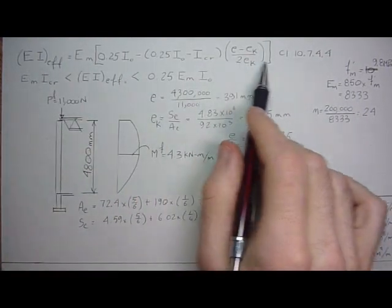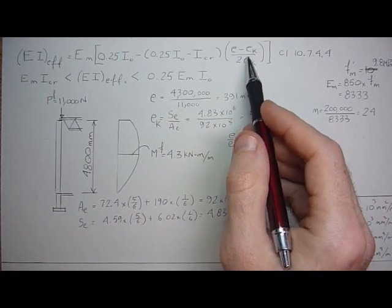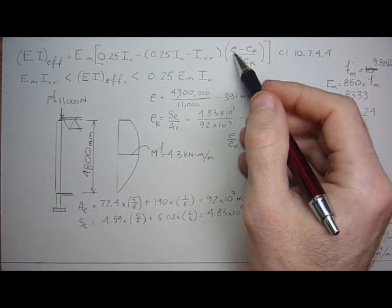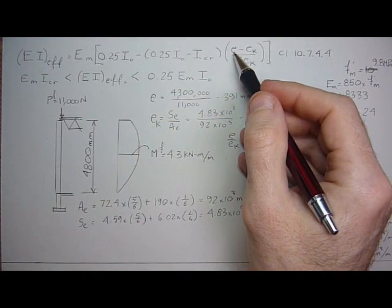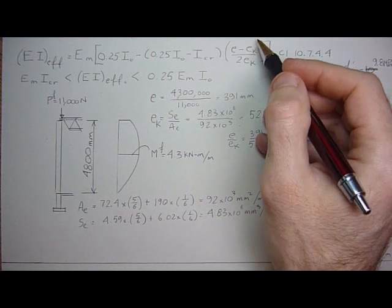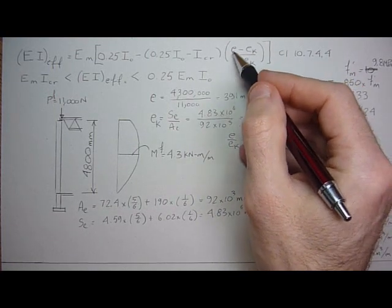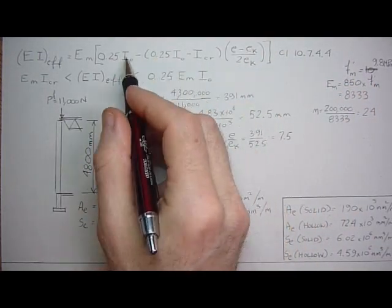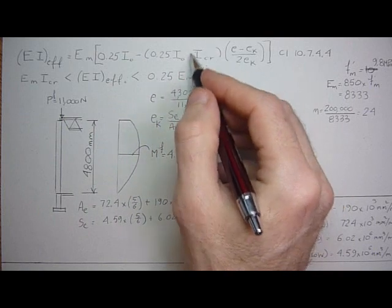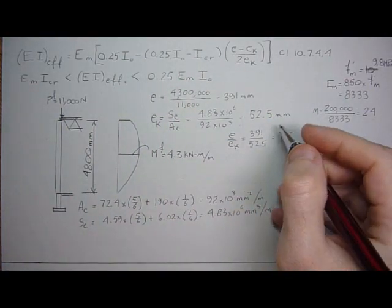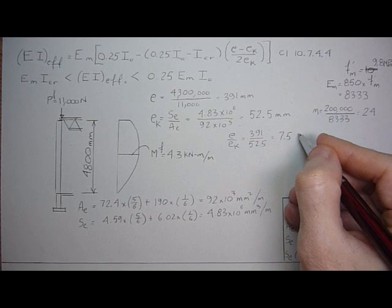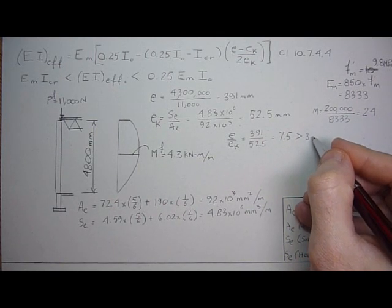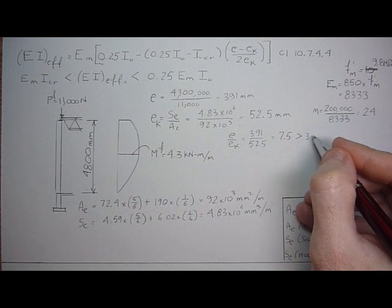So let's look at this. If this (E minus EK) term over 2EK equals 1—the way that you do it is if E is 3 times EK or more. If E is 3 times EK, then this comes up to 1, and then these two numbers cancel. This will become 0, and all you'd be left with is I cracked. So whenever this ratio E over EK is greater than 3...